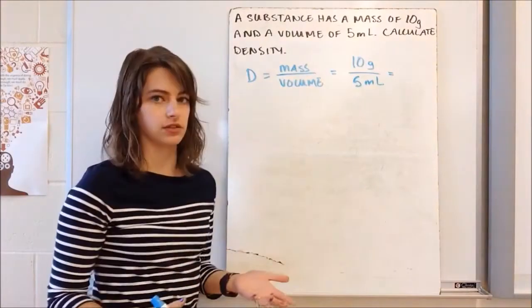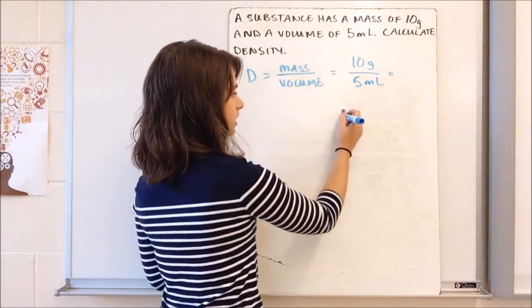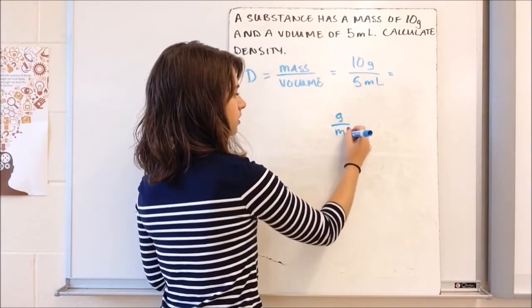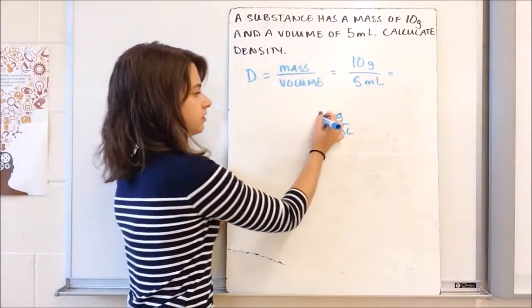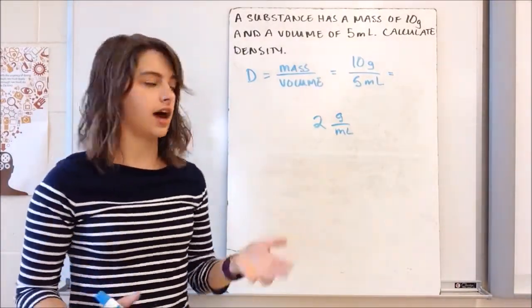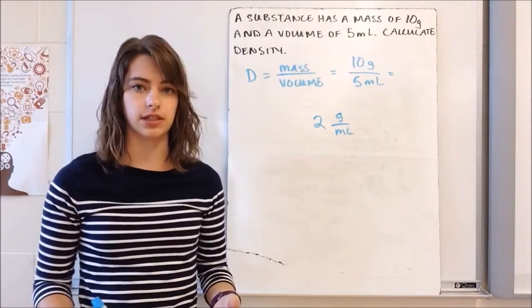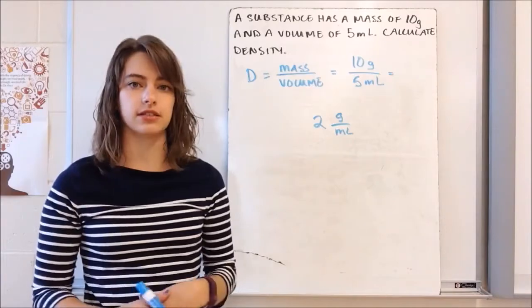Now my units aren't going to cancel. We can't do grams divided by milliliters with our units, so our units are going to stay grams per milliliter. But if I divide my numbers, 10 divided by 5 is 2. So this substance has a density of 2 grams per milliliter. If I were to measure out 1 milliliter of the substance, it should have a mass of 2 grams.